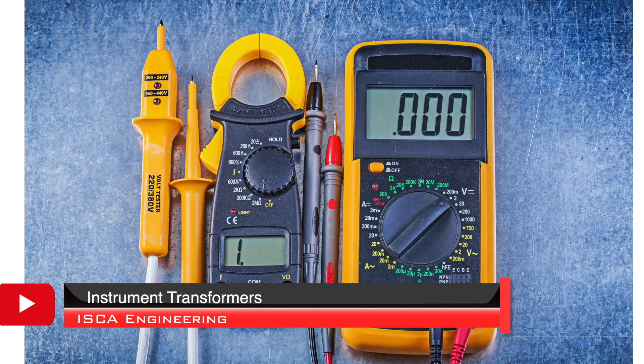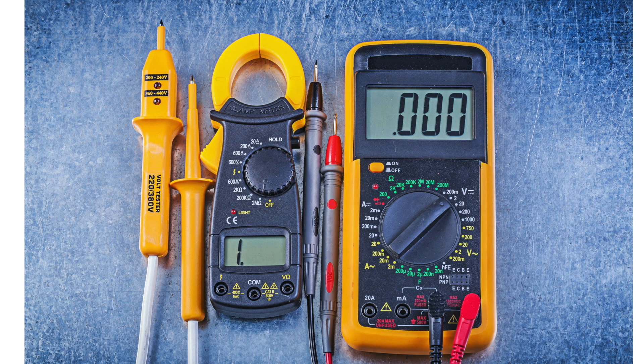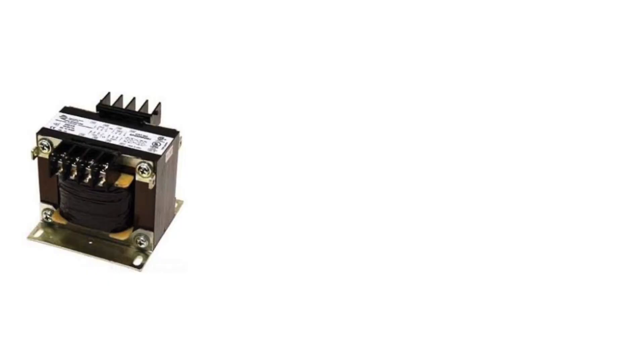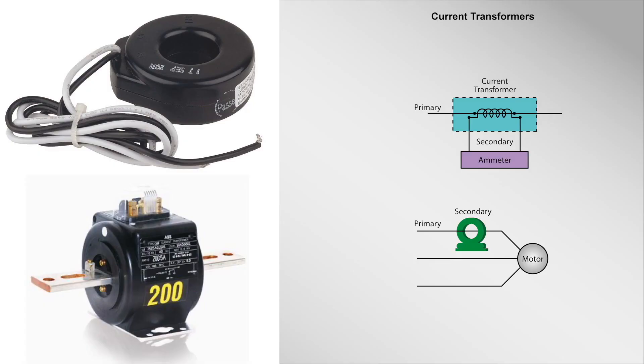Instrument transformers are used in conjunction with instruments such as ammeters, voltmeters, and relays for protective purposes. There are two types of instrument transformer, and they are the potential transformer and current transformer. The potential transformer operates in the same principle as the power transformer, except the capacity of the potential transformer is smaller. These transformers step down voltage to a lower level to make it possible to be measured by standard instruments with coil ratings of 120 volts. Current transformers are used to step down current of power systems to a lower level to make it possible to be measured by standard instruments.